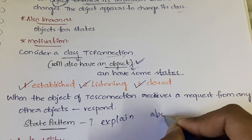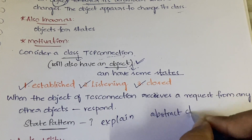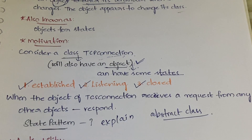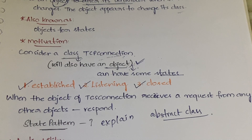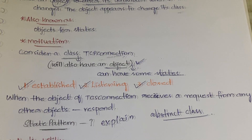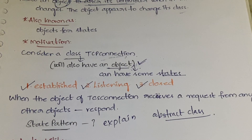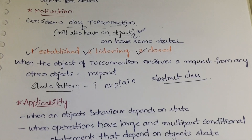The different behaviors in each state are achieved with the help of an abstract class. This is the motivation: we have a TCPConnection class with an object that has states, and in different states it exhibits different behavior — that is explained with the State Pattern.